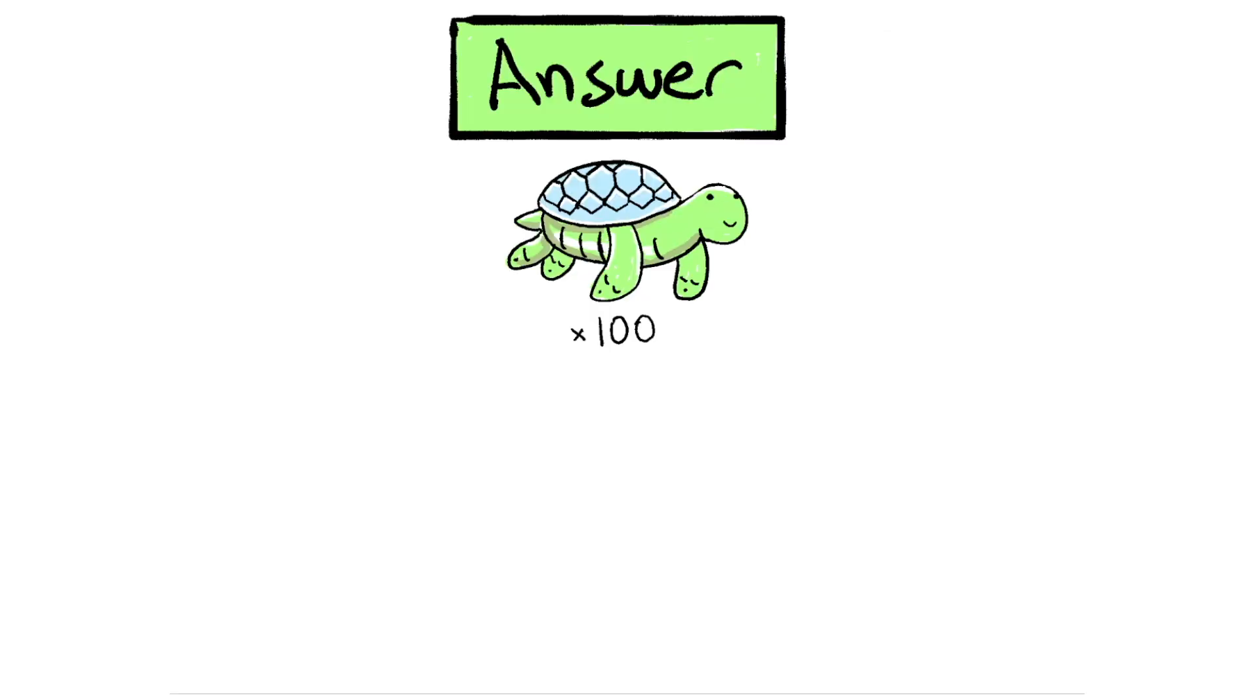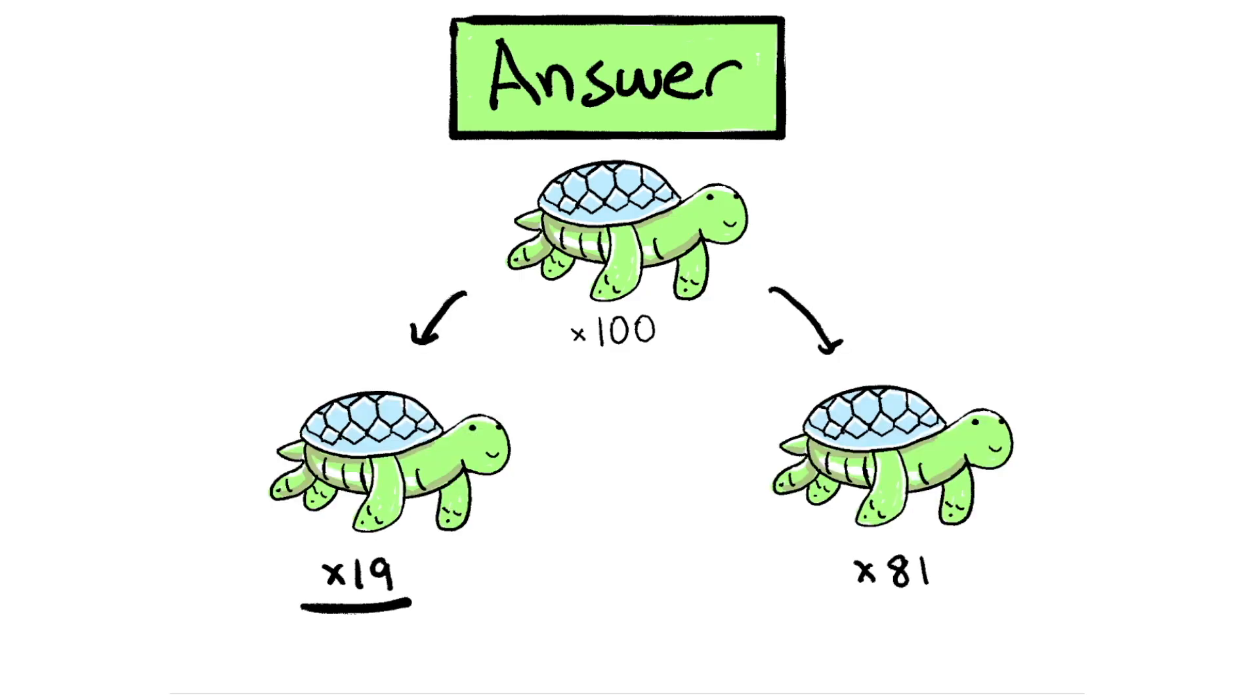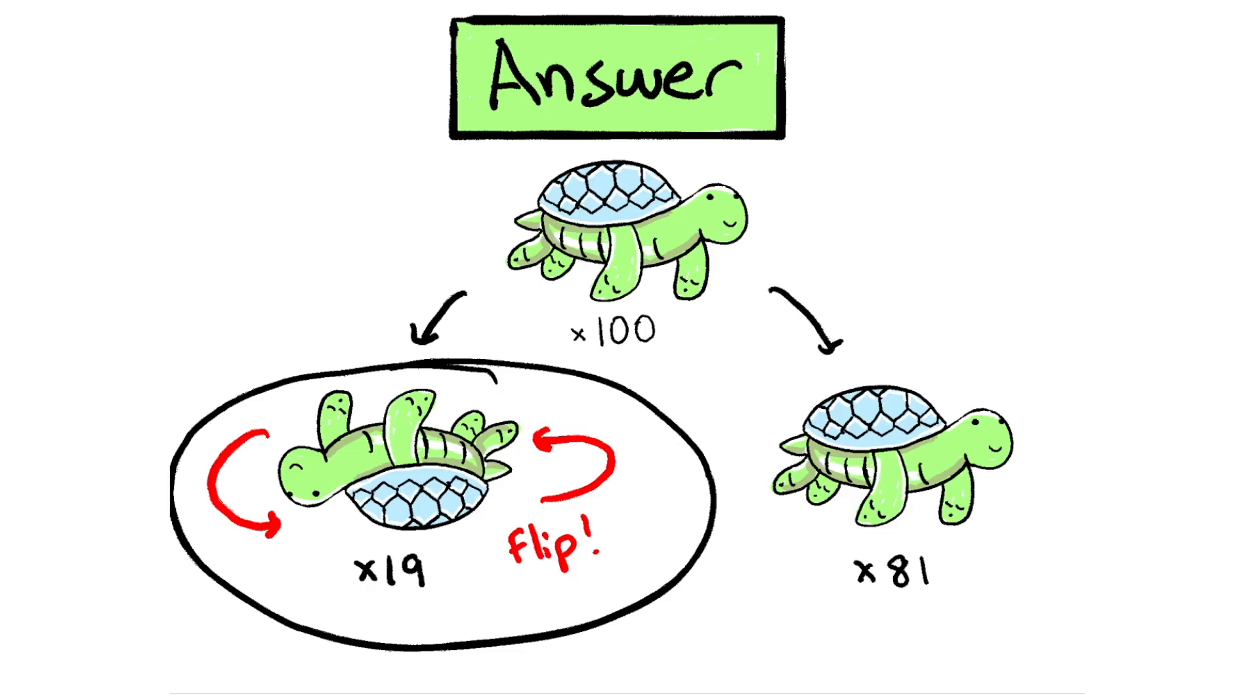So our final answer is to start with 100 turtles and split them into groups of 19 and 81. And then, we'll flip all 19 of the turtles, and that'll give us the same number of belly up turtles in both groups.